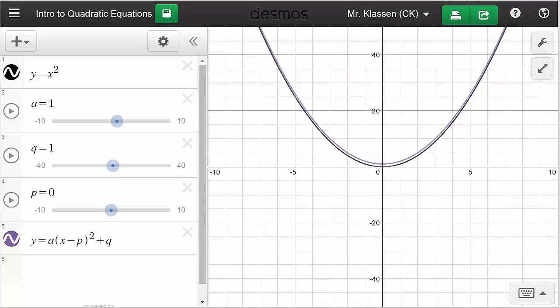Finally, we can take all of these transformations together into one equation: y equals a times x minus p squared plus q and put these sliders into motion. First I'll get a moving, and we can see the parabola gets skinnier or wider. Now I'll get q moving, and the parabola moves up or down. Now I'll get p in motion, which causes the parabola to translate from left to right.